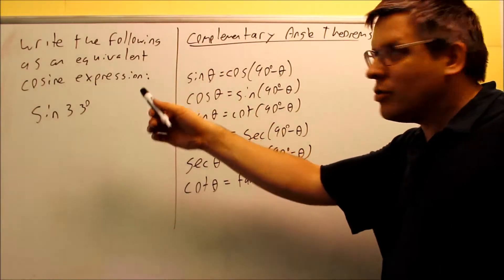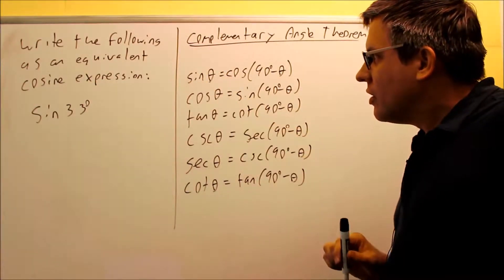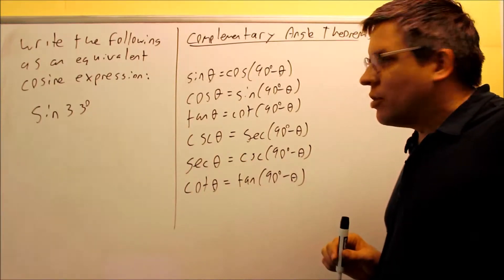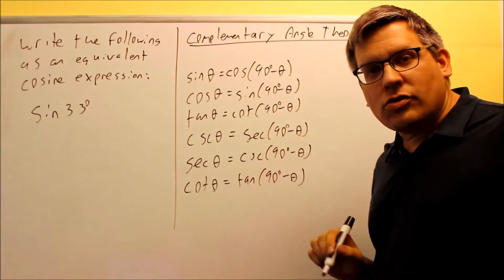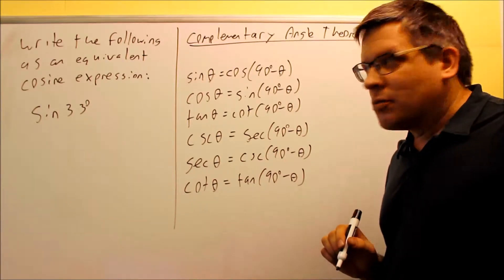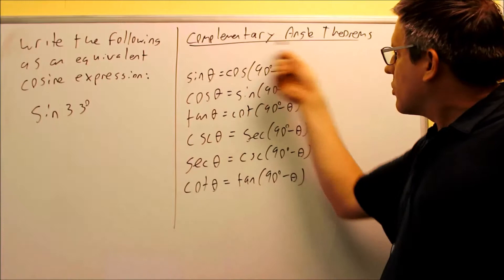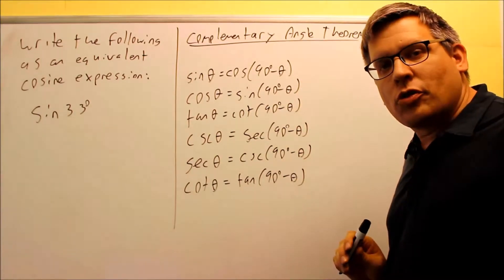Okay, so here's the first example we'll do here. We're going to write the equivalent as a cosine expression. So we're going to take sine 33, we're going to turn it into an equivalent cosine expression. So we're going to use the complementary angle theorems in order to do this.